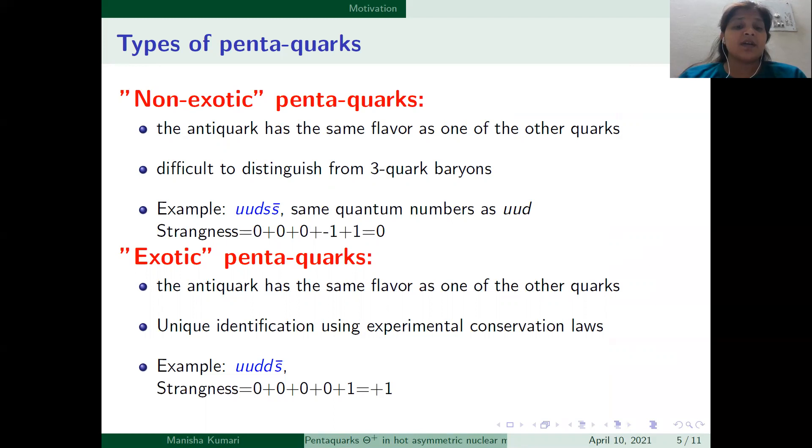The other is exotic pentaquark in which the anti-quark has the same flavor as one of the other quarks. Unique identification using experimental conservation laws. For example, uudds bar with plus one strangeness.